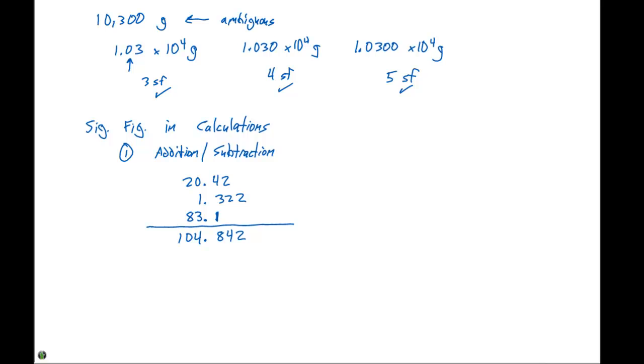So as a general rule of thumb, I find it easiest to draw a line down like this, because this value right here has the least significant decimal place. So that means the tenths place has to be the significant figure that we're gonna report.